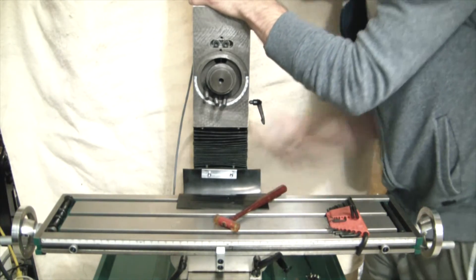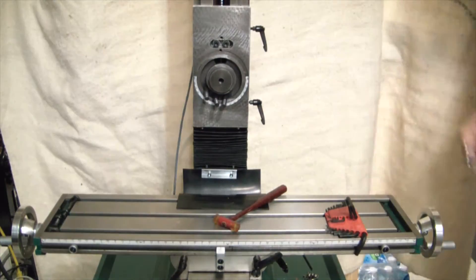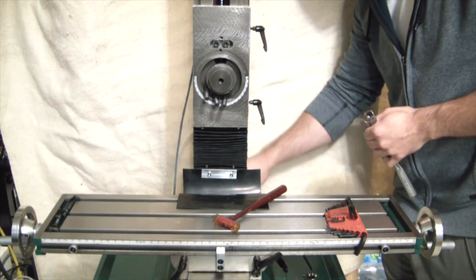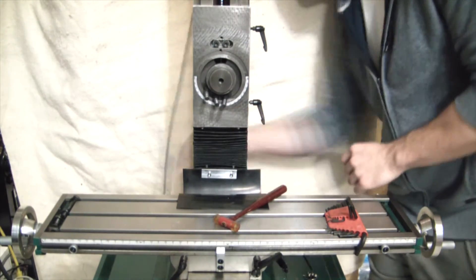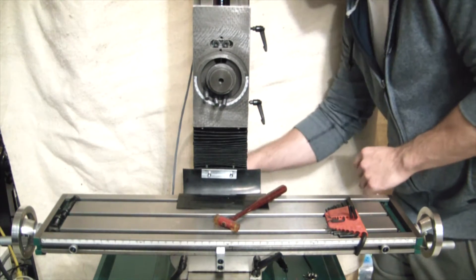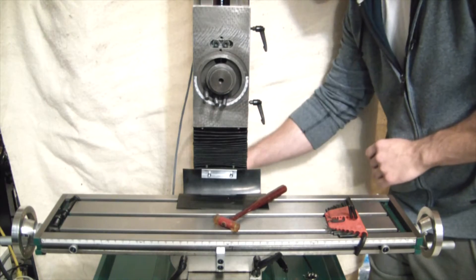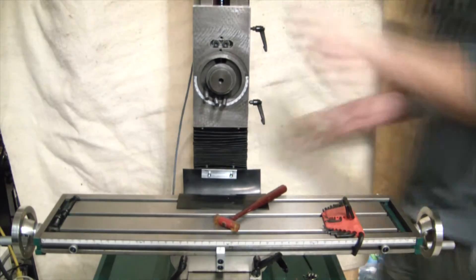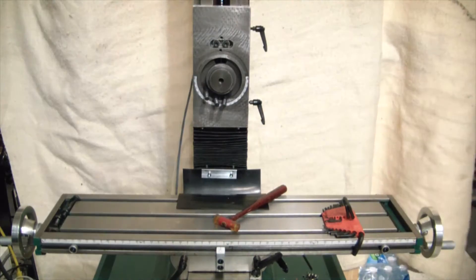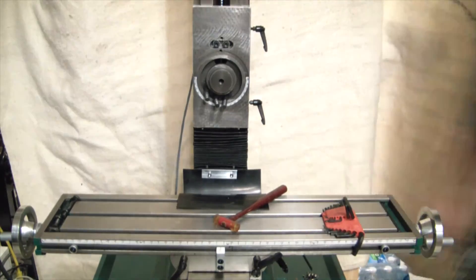Those bolts were in there pretty good on the column, they were a bit of a bear to get out and it took quite a bit of force there, a bit more than I would have liked to use. But that is important for rigidity and you don't want to have your column jiggling about while you're trying to mill stuff, so I certainly see why they're in there so tight.